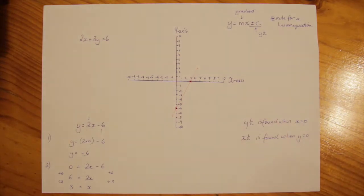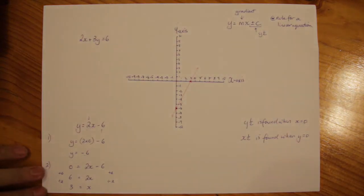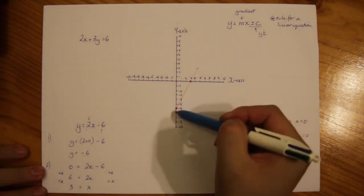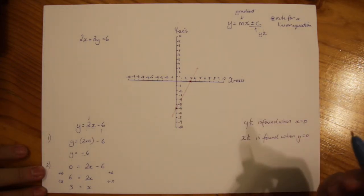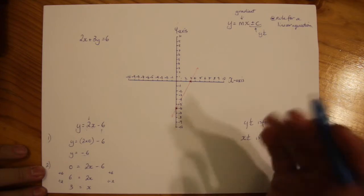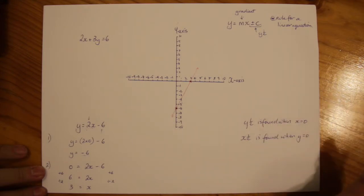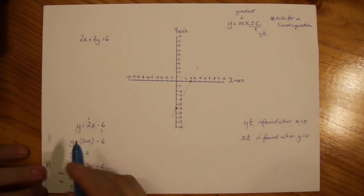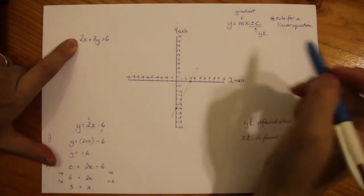So graphing a linear equation through the intercept method is as simple as that. You just need to find the two intercepts for x and y-axis and join those two dots and it should be fine. We're going to move on to this top one here.